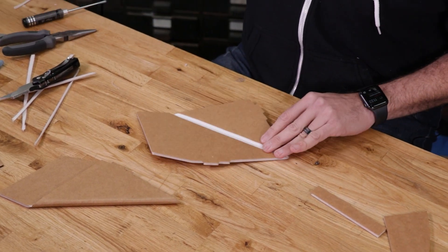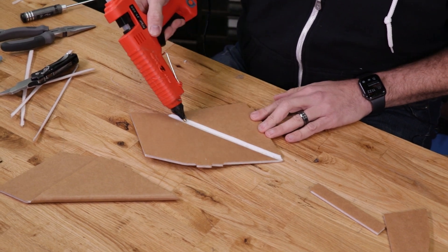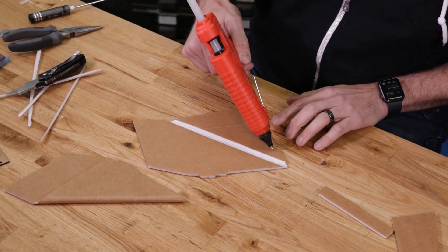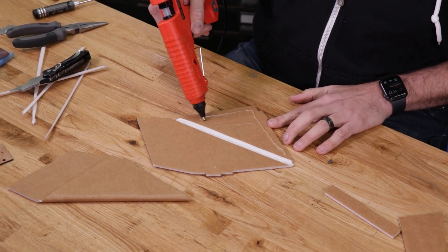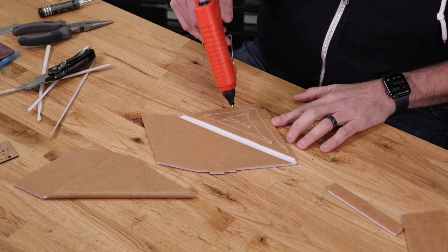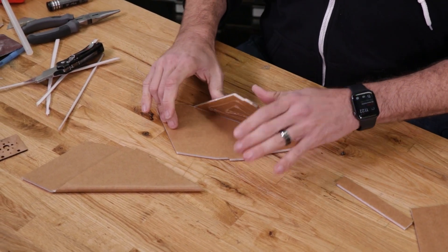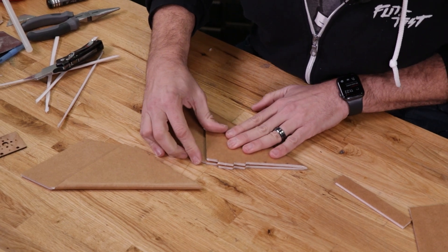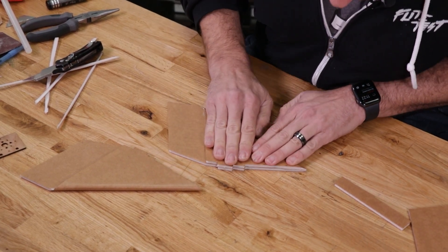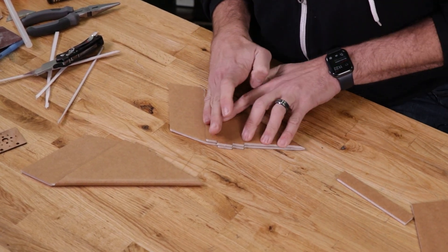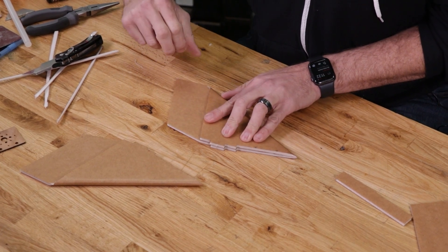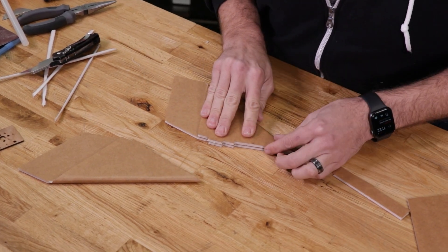Once everything looks good, come back with a healthy bead of glue right on the leading edge, and then around the perimeter and into the center. And when we fold this over, we want to make sure that we line up both the tabs and the bottom surface evenly. Hold this down for at least two minutes, making sure the glue is fully dry before you release.